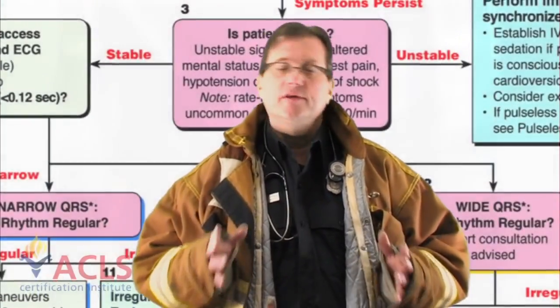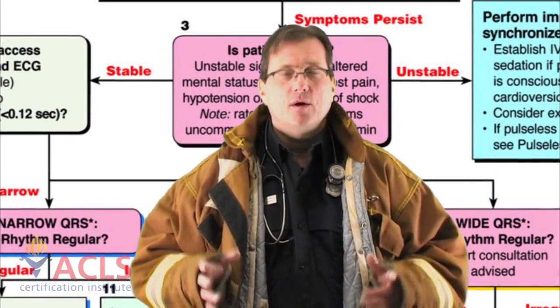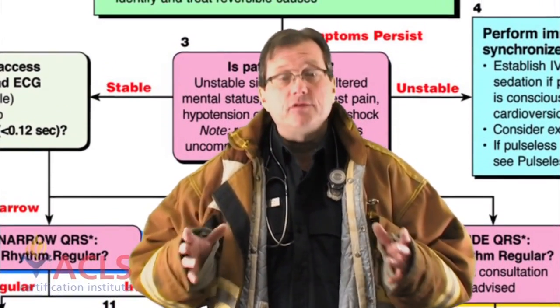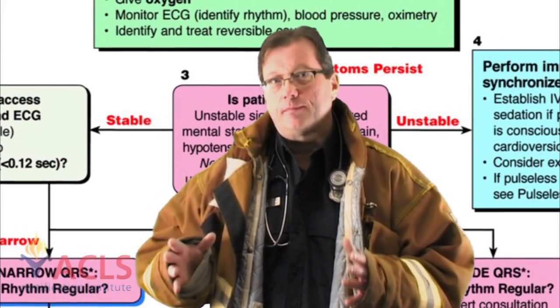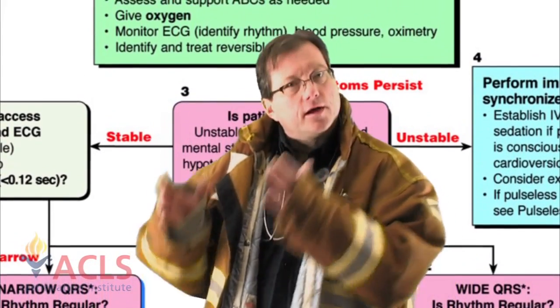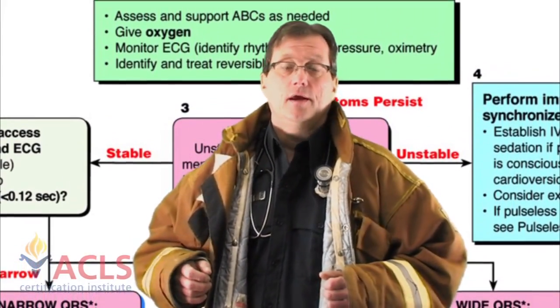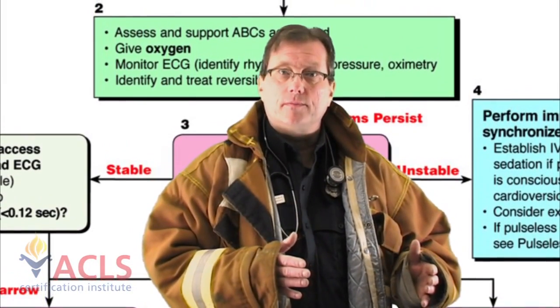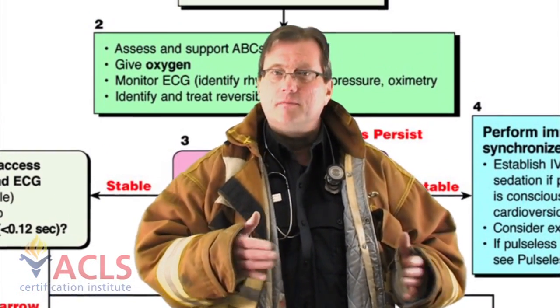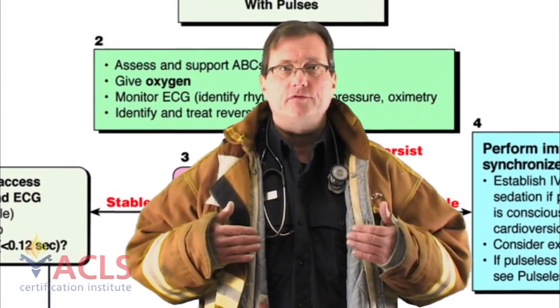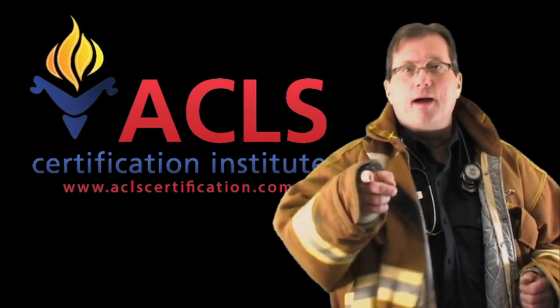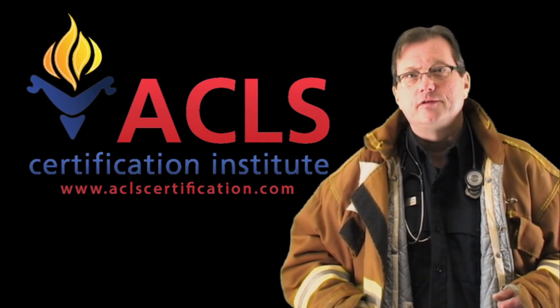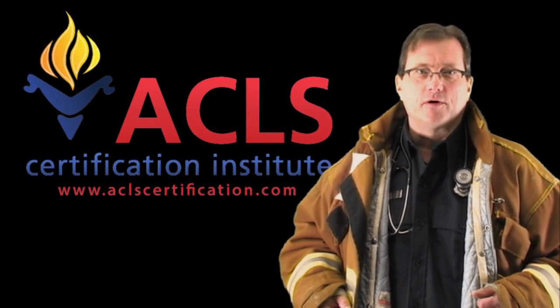Remember: when treating the patient with narrow complex tachycardia, what guides your therapy is whether the patient is hemodynamically stable. If there are serious signs of shock and hypotension — synchronized cardioversion. If the patient has a stable blood pressure and may be symptomatic — dizzy, chest fluttering — but hemodynamically stable, that's when you give them medications. I'm Mark for ACLS Certification Institute, and thank you for watching today's program.